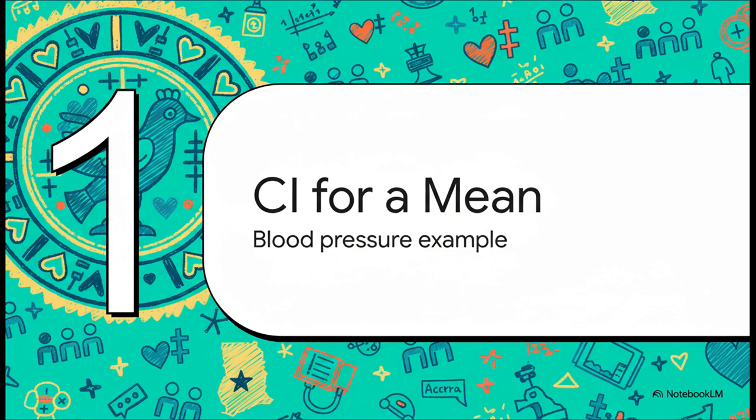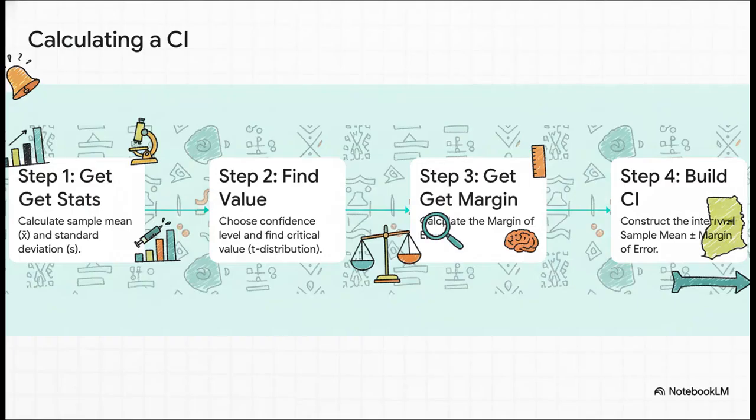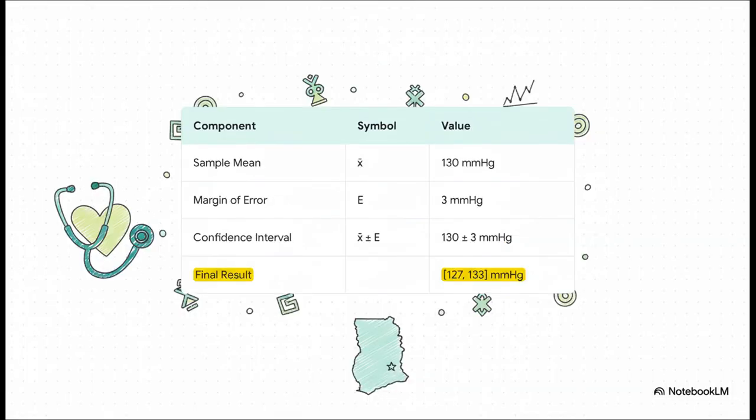Time to get into the nitty gritty. Let's see how this actually works when we're dealing with a measurement like blood pressure. It's a straightforward four-step process. First, you calculate your sample mean and also the standard deviation, which tells you how spread out your data is. Second, you pick your confidence level. Let's stick with 95% and find something called a critical value. We often get this from a t-distribution, which is perfect for health studies where you might have smaller samples. Third, you put those pieces together to calculate the margin of error. And finally, you just add and subtract that margin of error from your sample mean.